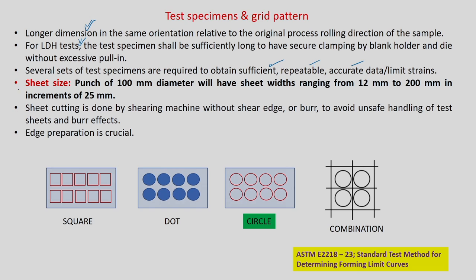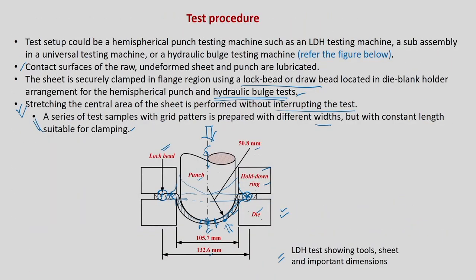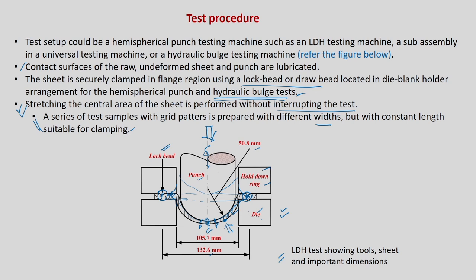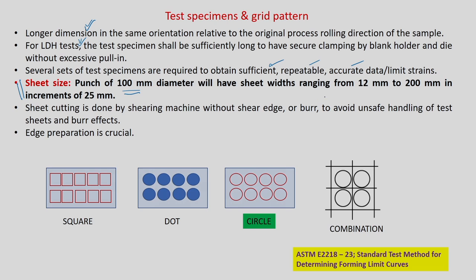A typical sheet size: if you use a punch of 100 mm diameter (50.8 mm radius as shown), the sheet width ranges from 12 mm to 200 mm. The narrow 12 mm width gives negative minor strain and the 200 mm width gives positive minor strain, at increments of 25 mm. You have to cut the sheet before the test using a shearing machine without any burr — edge effects are important, otherwise the sheet may fail in the gripping region. You may also need to polish the edges before deforming.